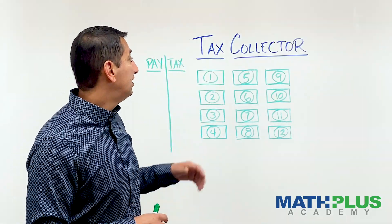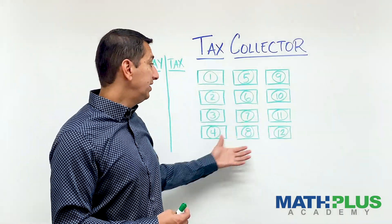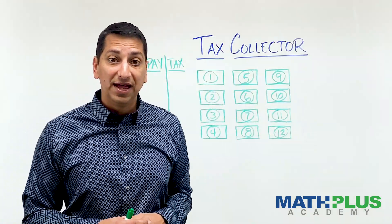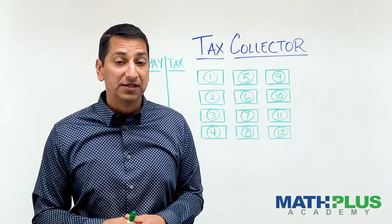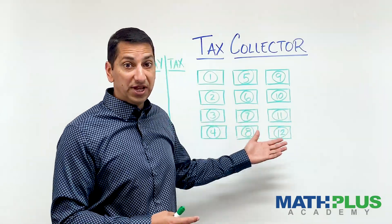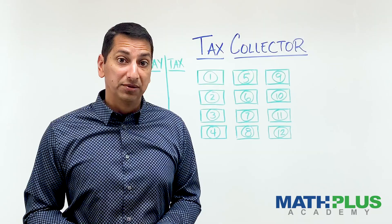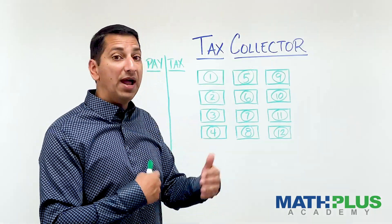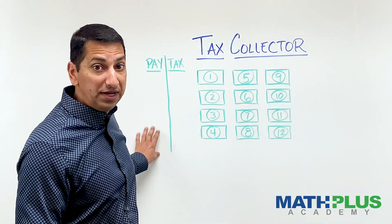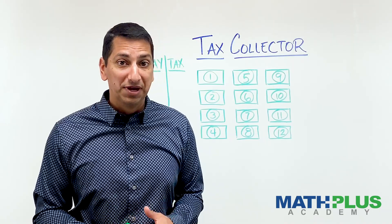It's a really cool problem. Basically, you have a job and you're going to get paid. You can choose any of these paychecks over here. But every time you do, the tax collector has to collect some tax from that paycheck. Whatever number you choose for your paycheck, they get all the factors of that number. You continue round after round until all the paychecks are gone, and you want to end up with more money than the tax collector.